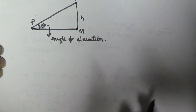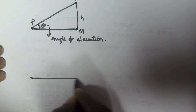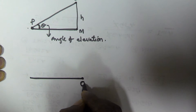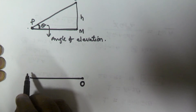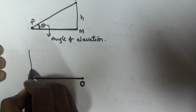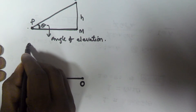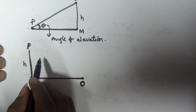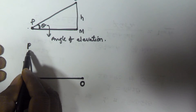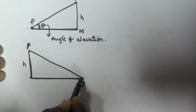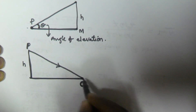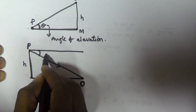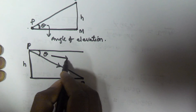Now we will see what is angle of depression. Let us assume a flat surface is there, on which one object O is here. The person is at height H, and this person is looking downward at object O. We draw a straight line here and take this angle theta.